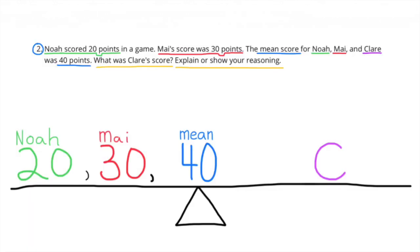They told us that the mean was 40, or the balancing number was 40. Noah scored 20 and I scored 30. Their numbers will be to the left of 40 because they're less than 40. And since the mean was larger than both Noah's score and my score, Claire's score would have to be greater than 40.